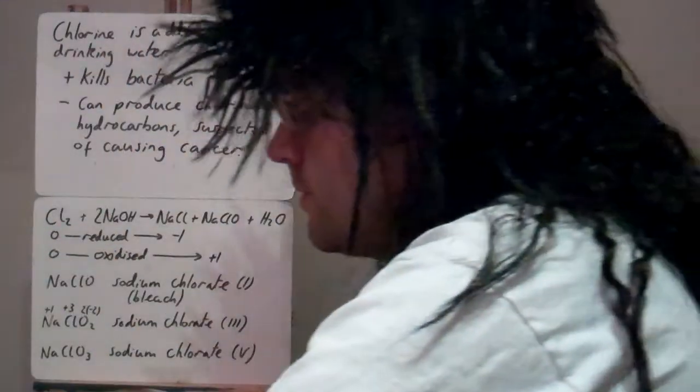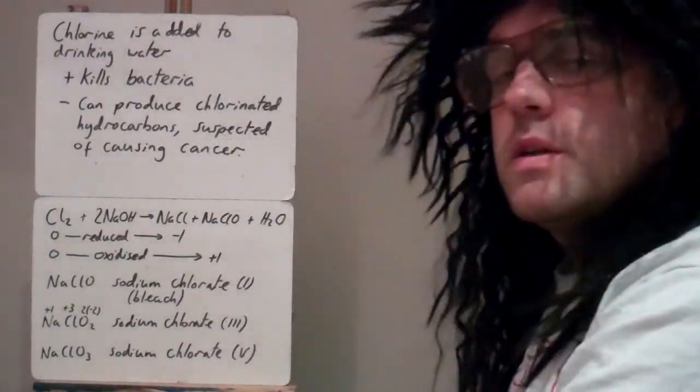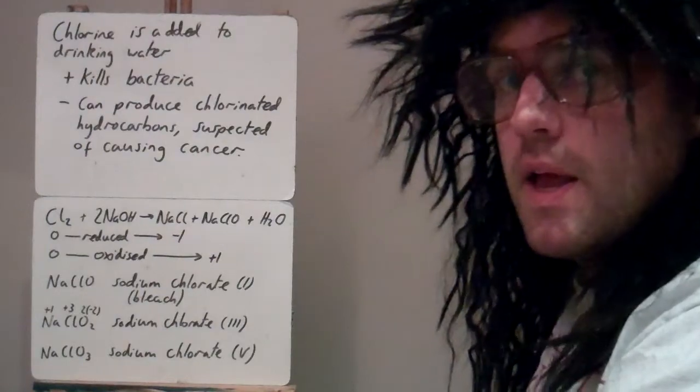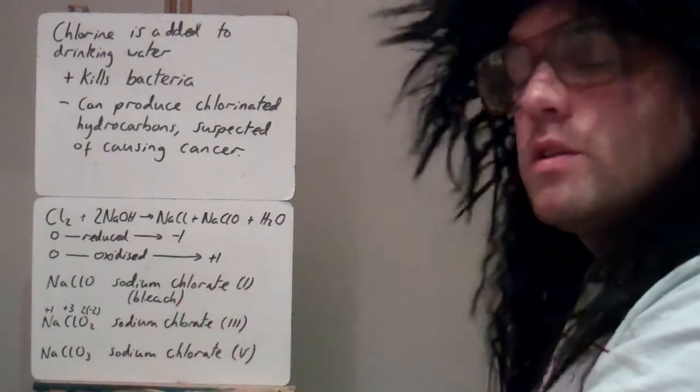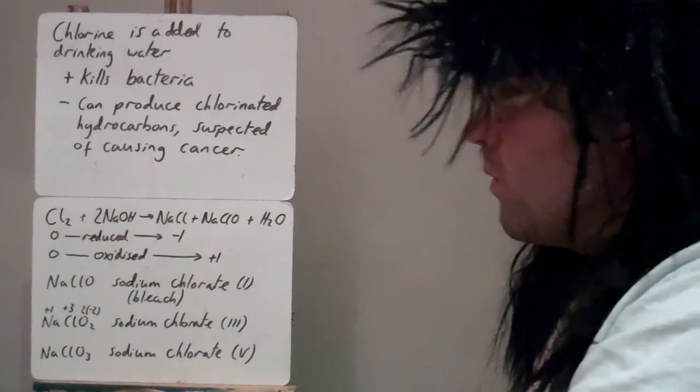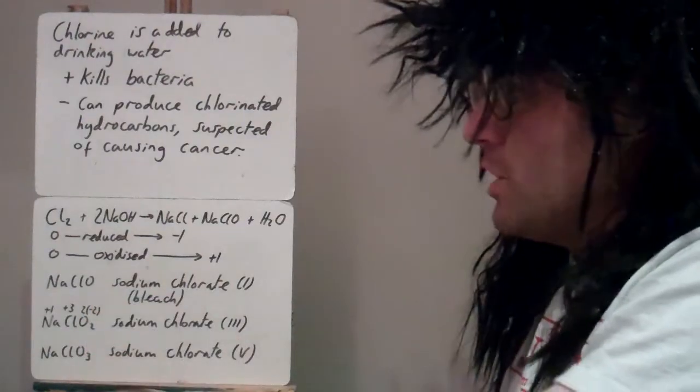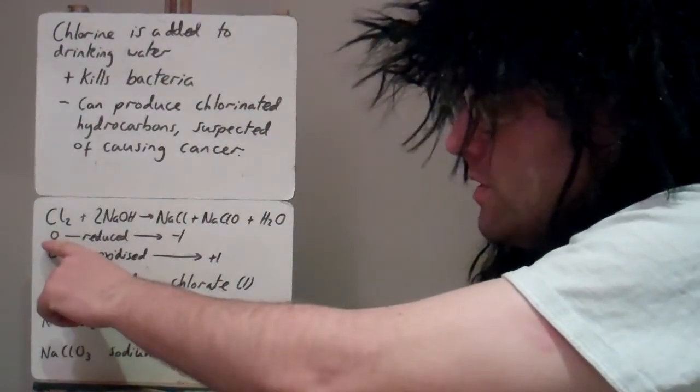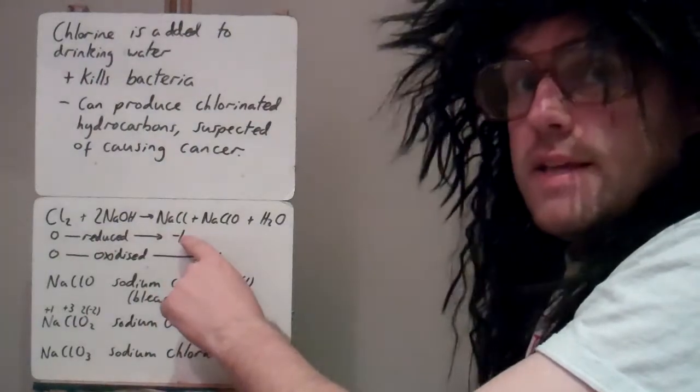The other reaction you need to know is chlorine reacting with sodium hydroxide, which makes sodium chlorate, which we call bleach. Again, it's a disproportionation reaction because the chlorine starts off as zero and it's minus one in NaCl.